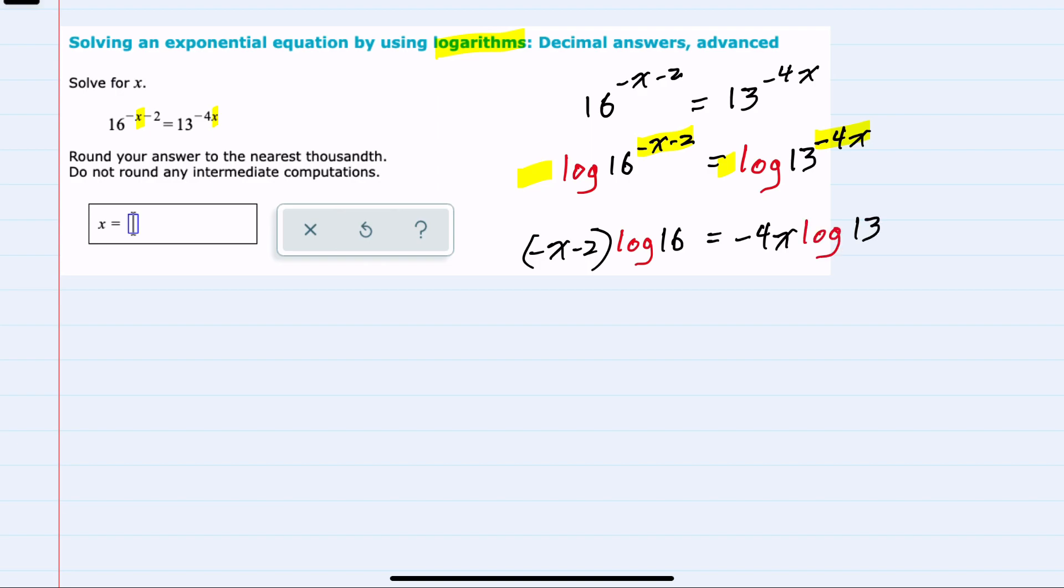From here, we're going to want to isolate the x's and move them to the same side. Our first step is, since this x is inside the parentheses, to remove the parentheses. I would need to distribute that log 16.